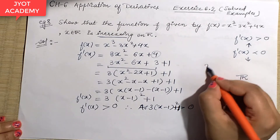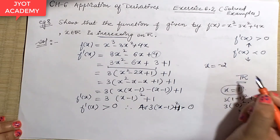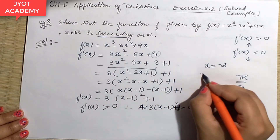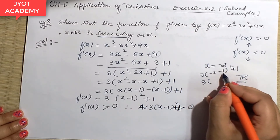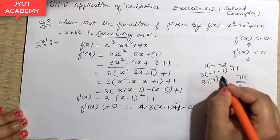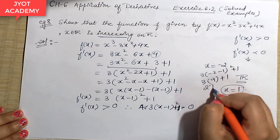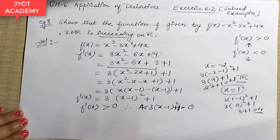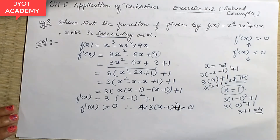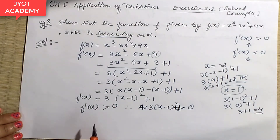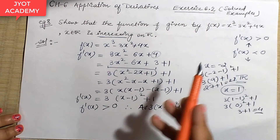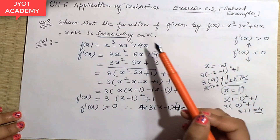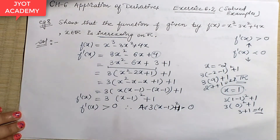If I suppose I take x as negative — suppose I take minus 2 — then just adding minus 2 here: the value is (minus 2 minus 1)², which is (minus 3)², that means 9; so 9 times 3 is 27 plus 1, that means 28. So every time you have a positive value greater than 0. You don't need to find intervals here. Simply tell that this function is increasing on ℝ — it's clearly an increasing function.